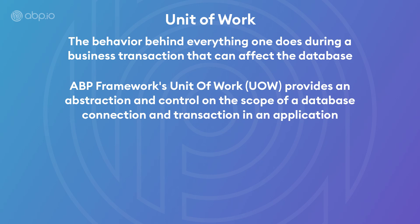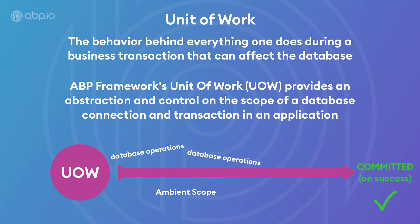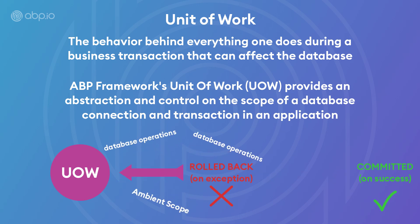ABP's approach to the implementation of the unit of work provides an abstraction and control on the scope of a database connection and transaction in an application. Once a new unit of work is started, it creates an ambient scope that is participated by all the database operations performed in the current scope and considered as a single transaction boundary. The operations are committed on success or rolled back on exception altogether automatically by the ABP framework.